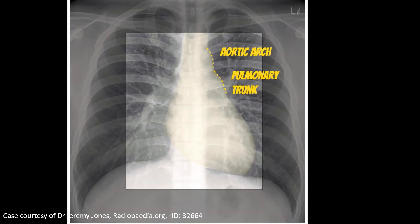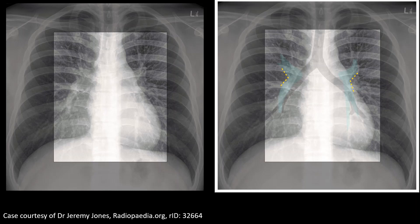On the left border of the mediastinum, we can appreciate the aortic knuckle due to the aortic arch. Below this is the pulmonary trunk, then the left ventricle. On the right side, this part indicates the superior vena cava, then the right atrium, and inferior vena cava. The hilar shadows on the right and left sides represent structures like bronchia and bronchi and primary vessels. Generally, the right hilum is at a higher level than the left hilum.